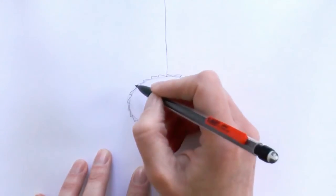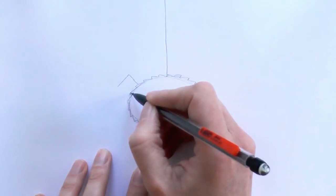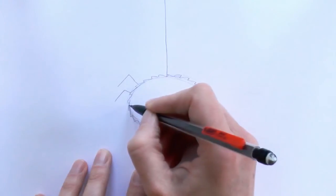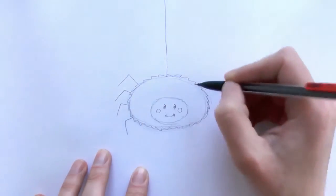For his little legs, just draw kind of triangle lines, just like that.